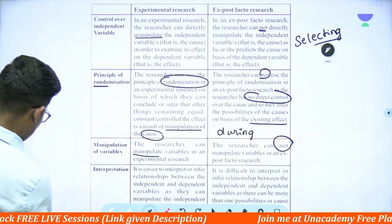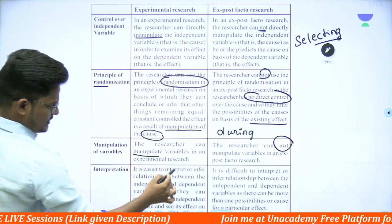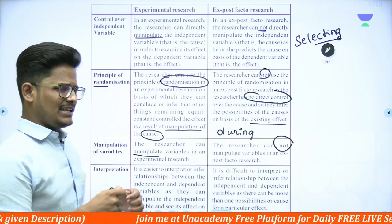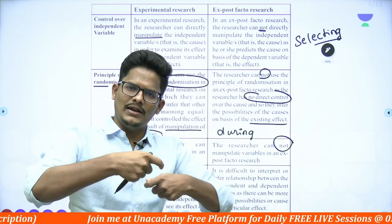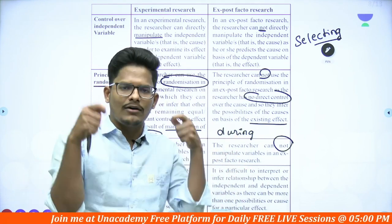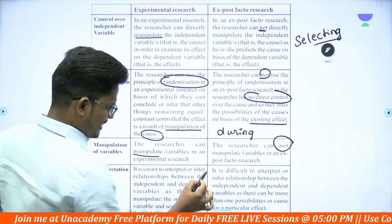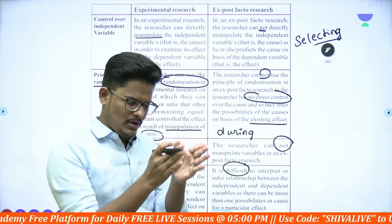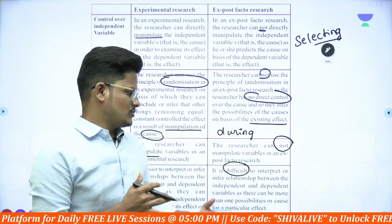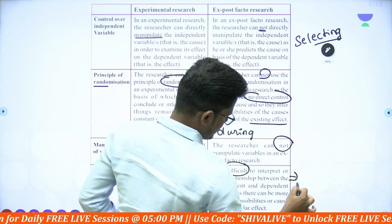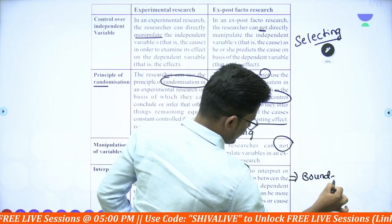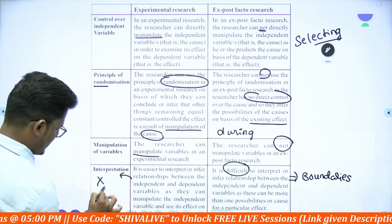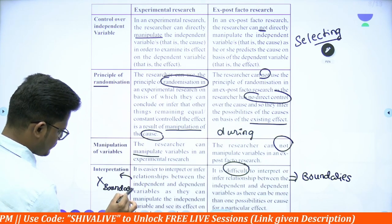Regarding interpretation: in experimental research, it is easier to interpret the relationship between independent and dependent variables because we can manipulate and change the independent variable as per our knowledge. Whereas in ex-post facto research, it is very difficult to interpret — we can only study that specific incident as it occurred. There are boundaries in ex-post facto research, whereas there are no such boundaries in experimental research.